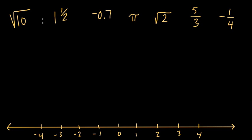Okay, so our job in this problem is to convert each of these to decimals, graph them on the number line, and identify which are rational or irrational.